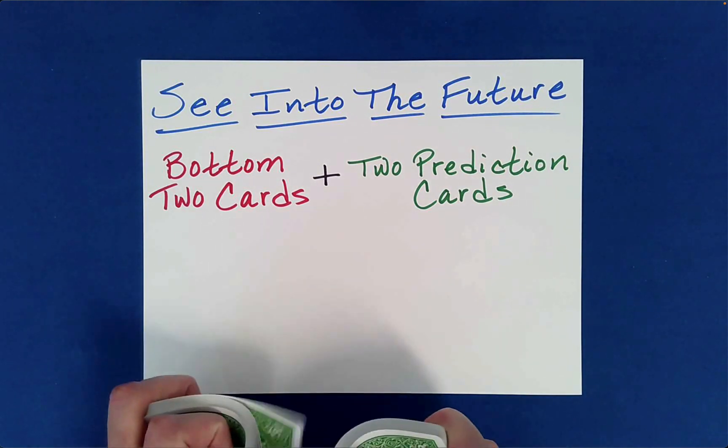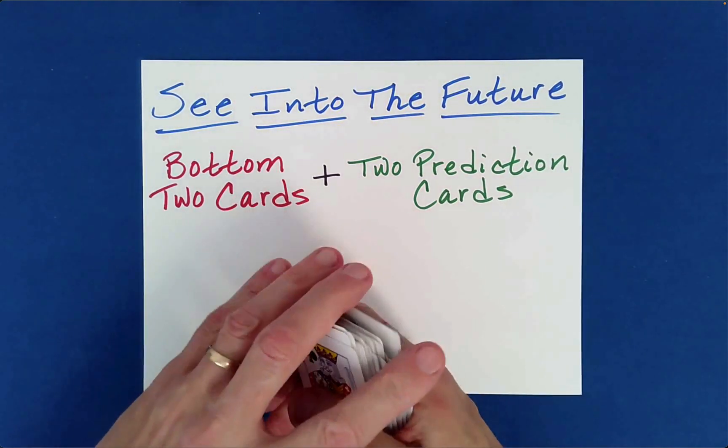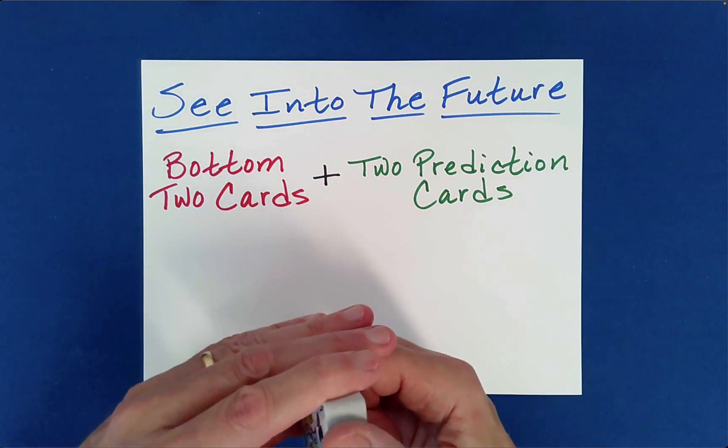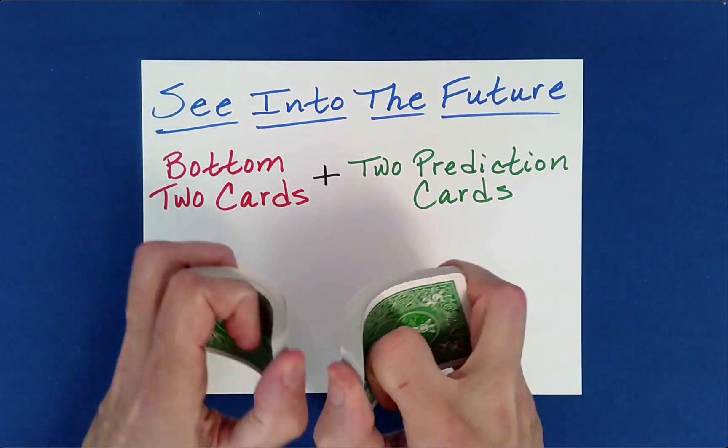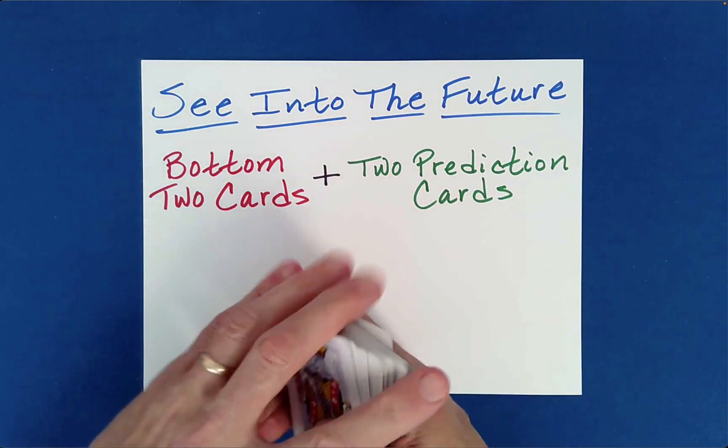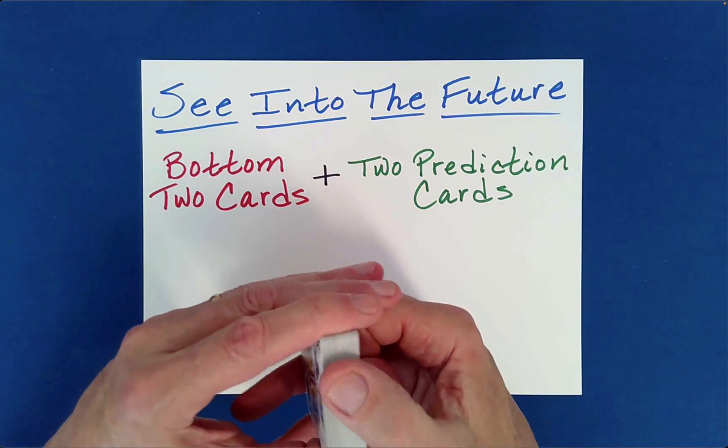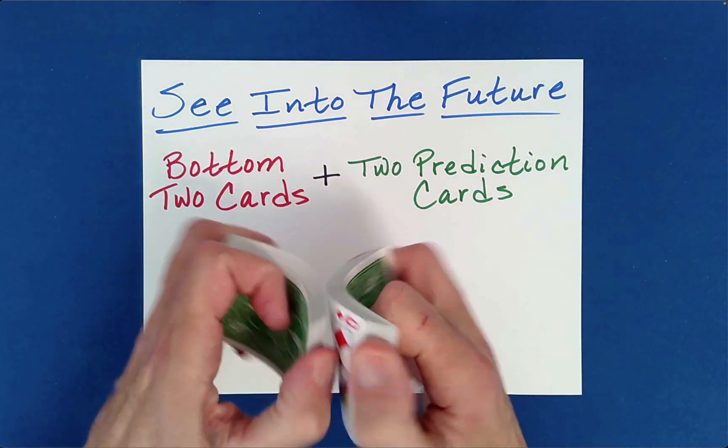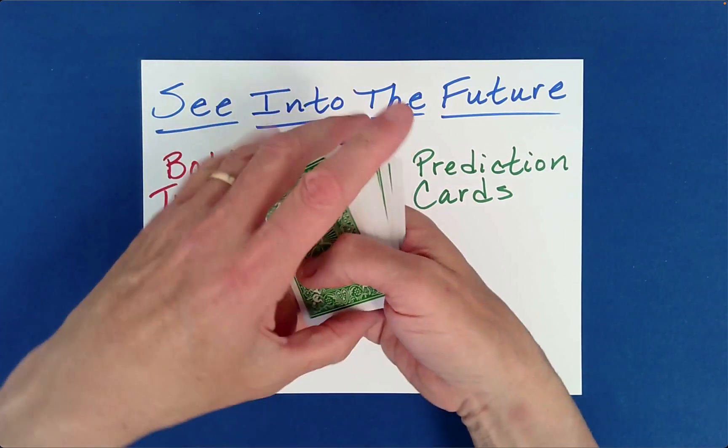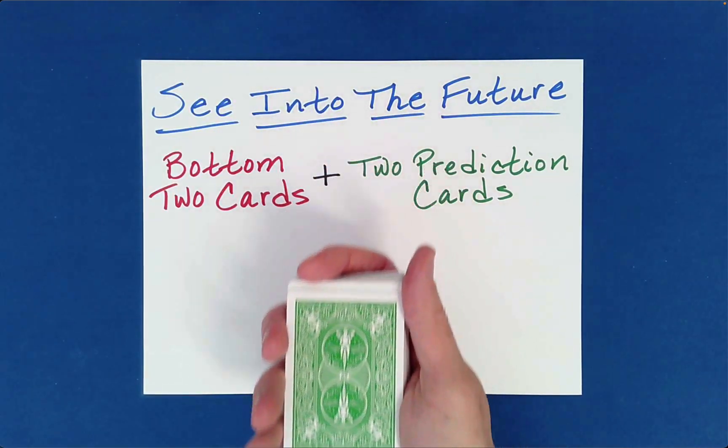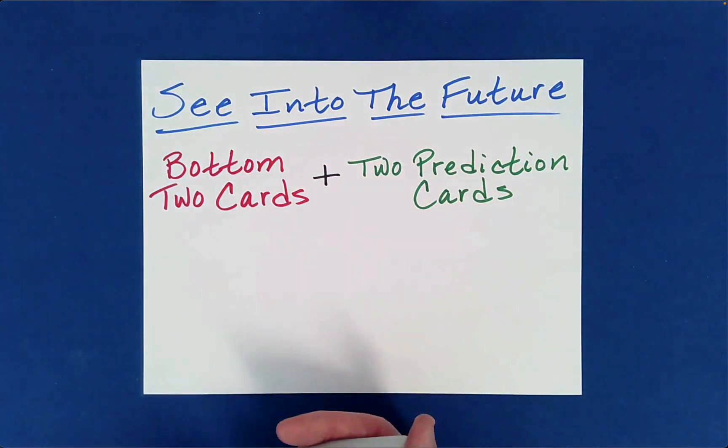This is See Into the Future, and if you were here, I would have you shuffle the cards as much as you would like. You could even table wash the cards. And once you're satisfied that the cards are sufficiently mixed, I would just take the cards from you and choose two prediction cards. Now, of course, I would do that in a way that you can't see the faces of the cards.